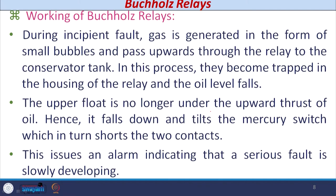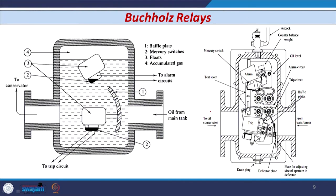During an incipient fault, gas is generated in the form of small bubbles and they pass upwards to the relay. Whenever they become trapped in the housing of the relay, the oil level falls. There are two floats: the upper float is meant for the alarm circuit — to indicate an alarm so the operator can take a decision — while below the lower float, a mercury switch is provided for the tripping circuit. Whenever gas or bubble formation is large, the lower float comes into picture, whereas when bubble formation is very slow, the upper float comes into picture.